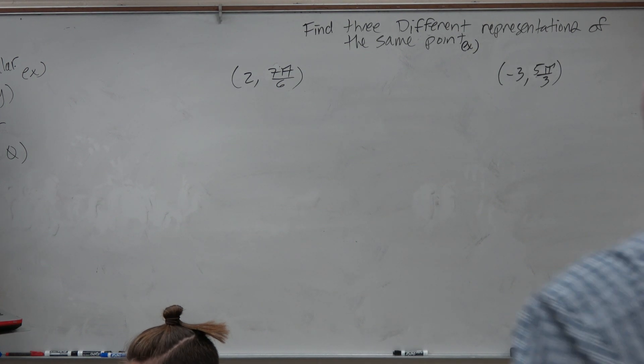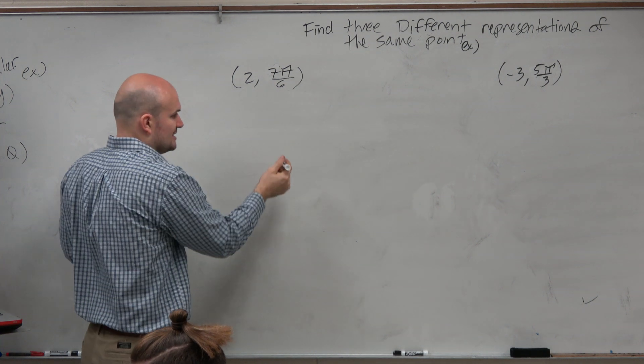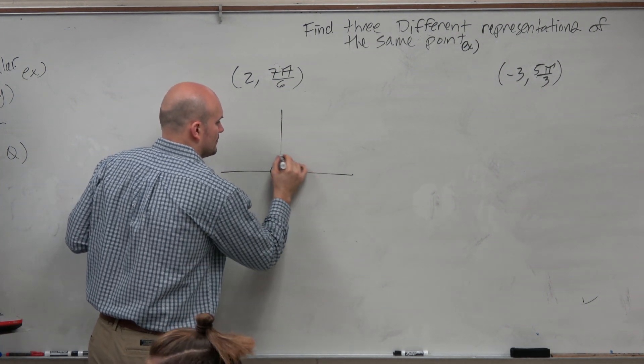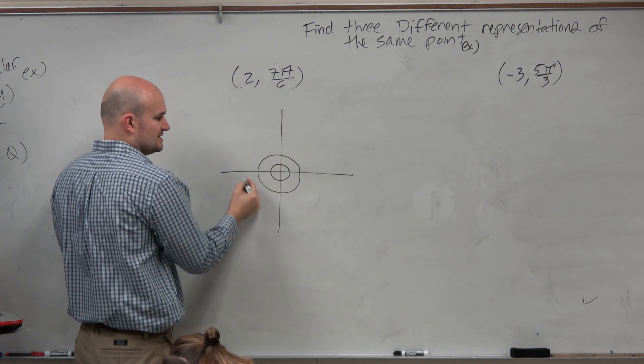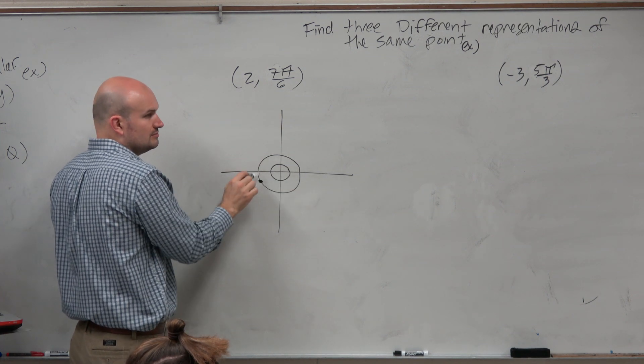The first one in this question is basically asking us, can you find three different representations of the same coordinate point? So the first thing, guys, is let's just go ahead and graph the point. If we graph this point, 7π over 6, we should know is in the third quadrant. So that would be your point, ring 2, right there.